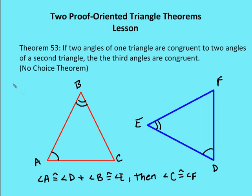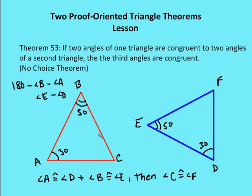So if I have a triangle that equals 180 degrees, and I subtract the measure of angle B — which is equal to the measure of angle E — and then I subtract the measure of angle A — which is equal to the measure of angle D — then my differences are going to be the same. If I subtract congruent angles from congruent angles, their differences are congruent. So if A is 30 degrees, then D must be 30 degrees; and if E is 50 degrees, then B must be 50 degrees. That leaves 180 minus 80 for the measure of angle C, and also angle F. That's called the no-choice theorem.